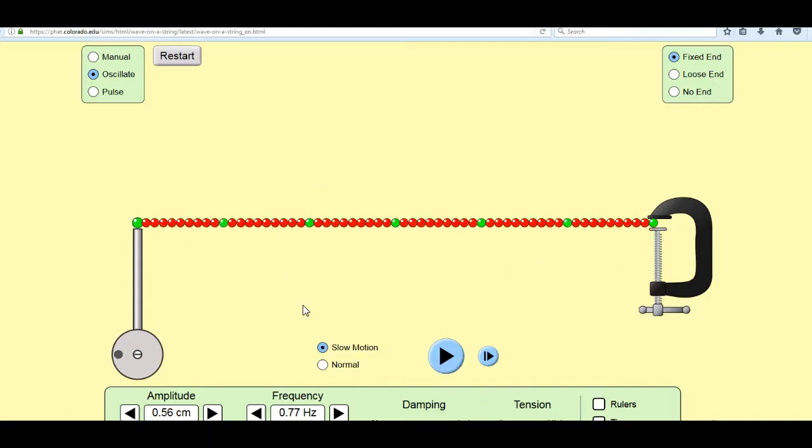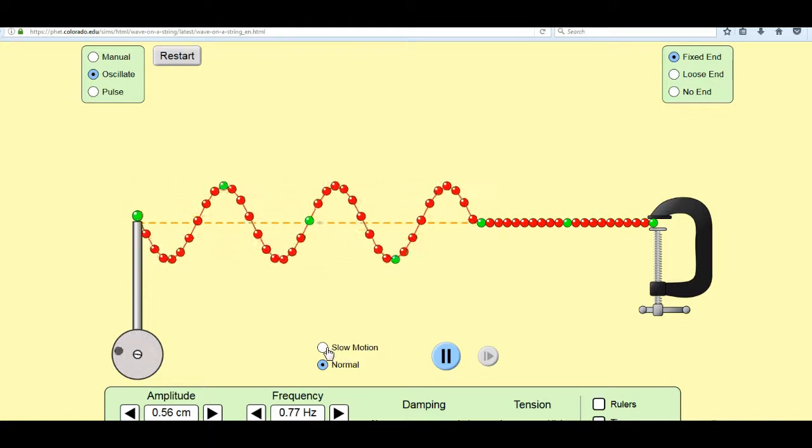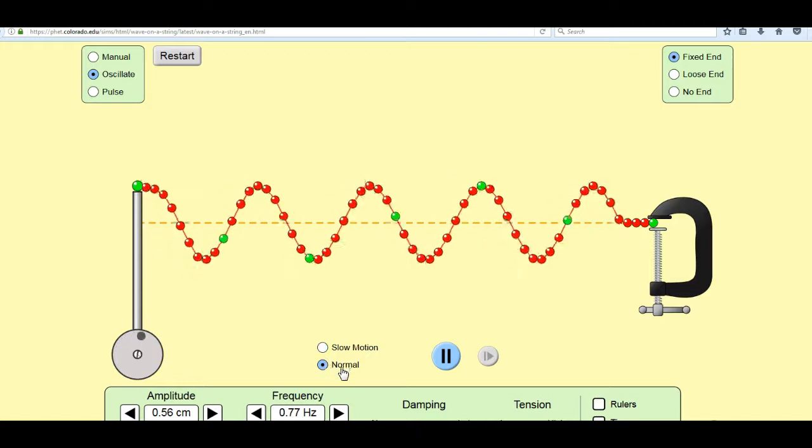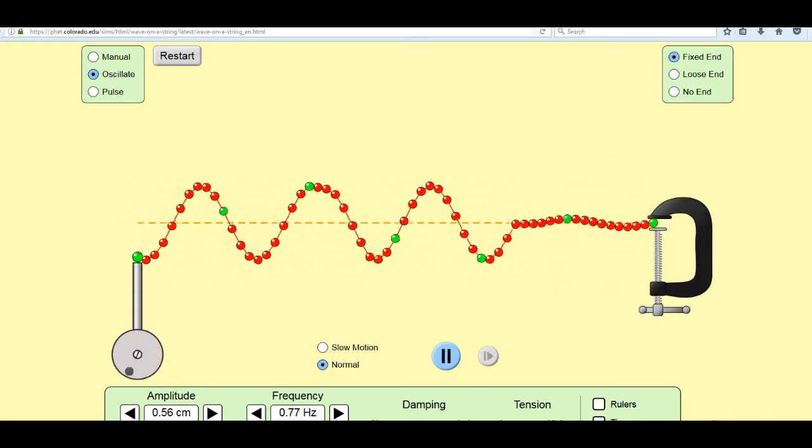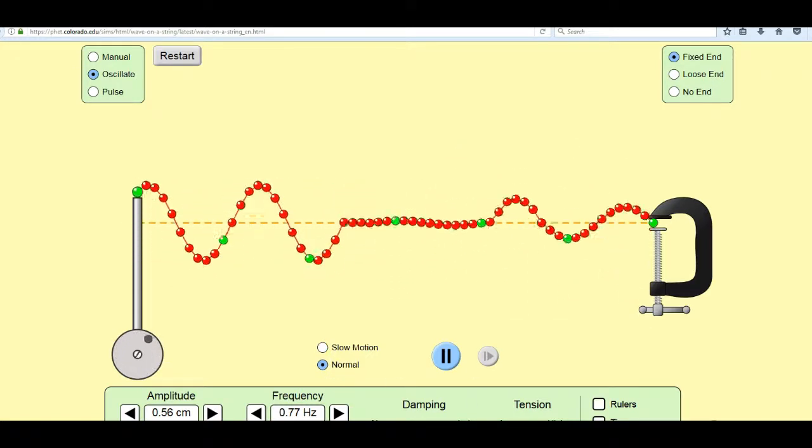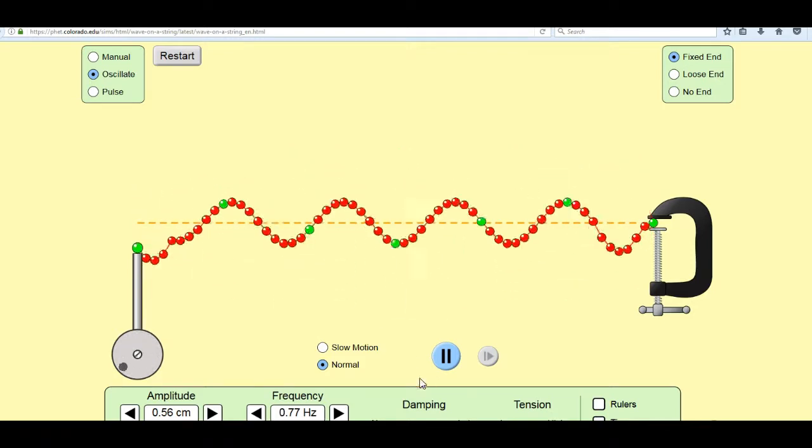Let's watch that one more time. There's a wave traveling to the right. And then there's an identical reflection. When the two interfere, that's what makes the standing wave.